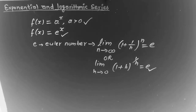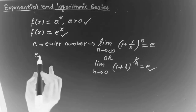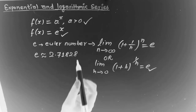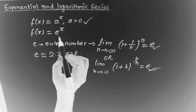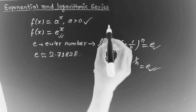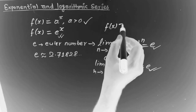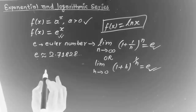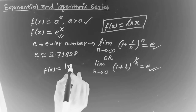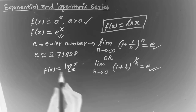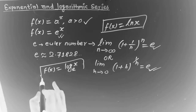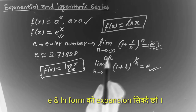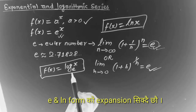This is f(x) equals ln x, the natural logarithmic function. This is also written as f(x) equals log of x to the base e. In this video, we will cover the Euler number expansion, ln x, and log of x to the base e.